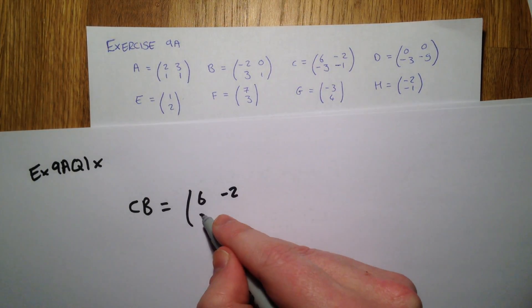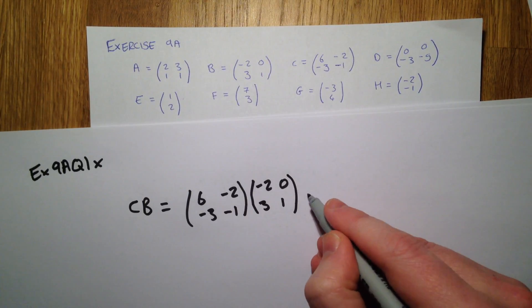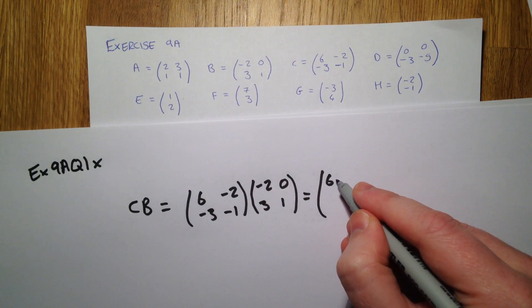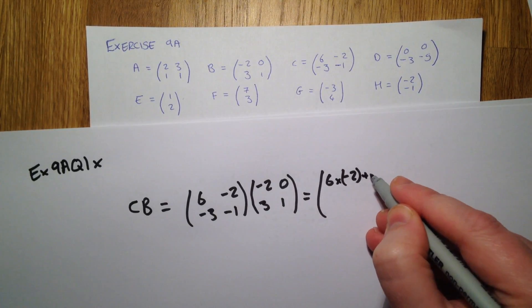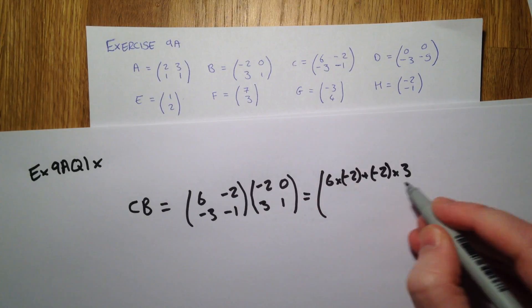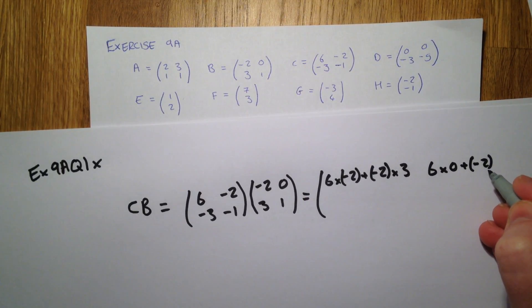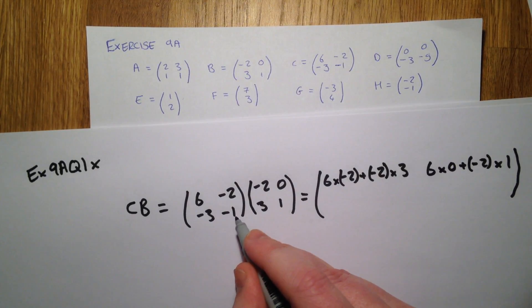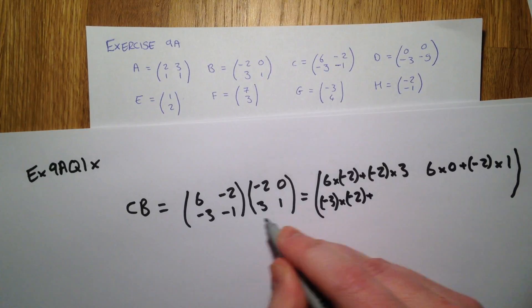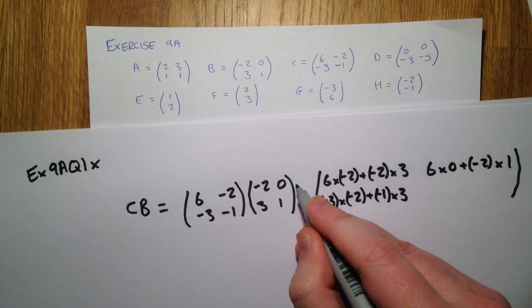CB. Top row versus left column. Top row against right column. Bottom row with left column. Bottom row with right column.